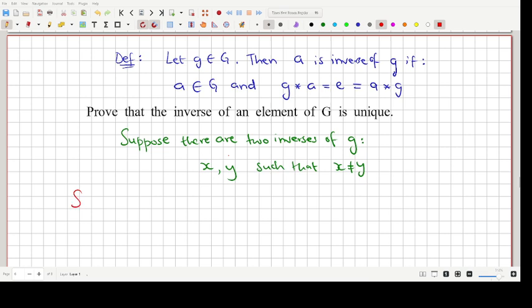So since X is inverse of G, therefore what do we get? We get that G star X is equal to E which is equal to X star G. Let's name this as equation 1.